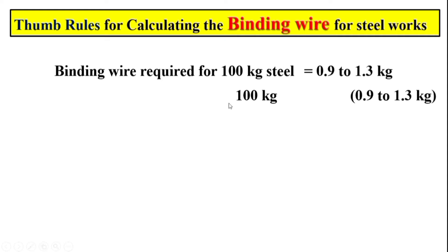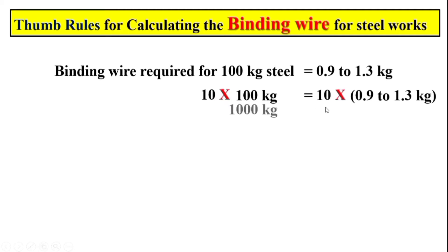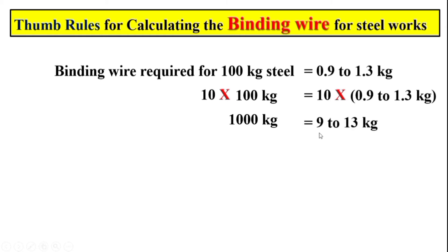Now if we calculate the quantity of binding wire for one ton of steel, we just multiply this term by 10 to get the value for 1000 kg. So for 1000 kg of steel, we require 9 to 13 kg of binding wire.